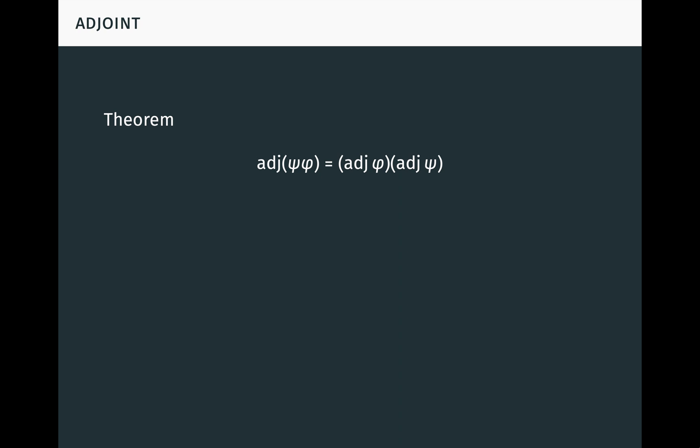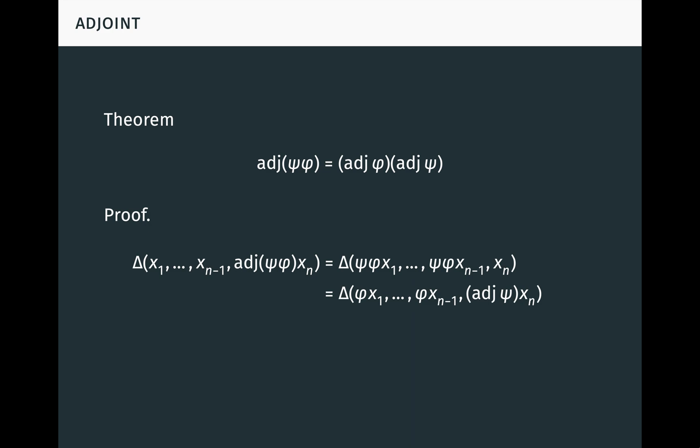The adjoint mapping itself is multiplicative: the adjoint of a composite psi∘phi equals the composite of the adjoints in reverse order, adj(phi)∘adj(psi). By definition of adj(psi∘phi), for any vectors x1 to xn, delta of (x1,...,x_{n-1}, adj(psi∘phi)(x_n)) equals delta of (psi(phi(x1)),...,psi(phi(x_{n-1})), x_n), which by definition of adj(psi) equals delta of (phi(x1),...,phi(x_{n-1}), adj(psi)(x_n)), which by definition of adj(phi) equals delta of (x1,...,x_{n-1}, adj(phi)(adj(psi)(x_n))). The result follows since delta is non-zero.